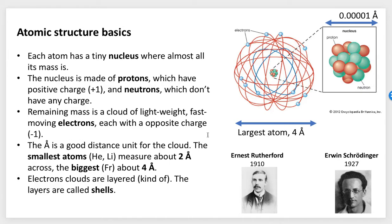It turns out the smallest atoms measure about two angstroms across and the biggest, which is francium, is a bit more than four angstroms across. So angstrom is a useful unit.